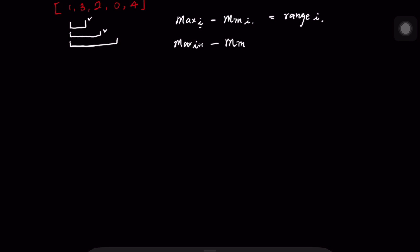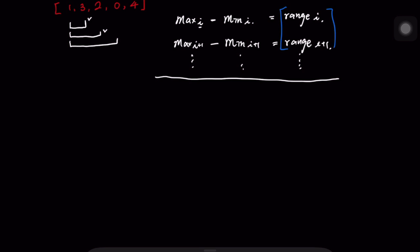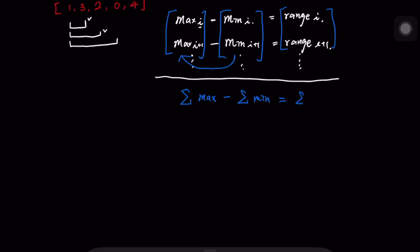To sum up all the ranges, I can sum up all the maximum values and sum up all the minimum values, then subtract the total minimum from the total maximum. So I can find the maximum value and minimum value contributions separately, and their difference will equal the total sum of ranges.